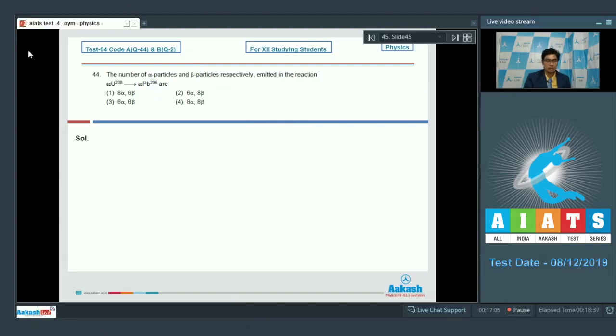We must know that in alpha decay, the mass number decreases by 4, while in beta decay, the mass number is unchanged.